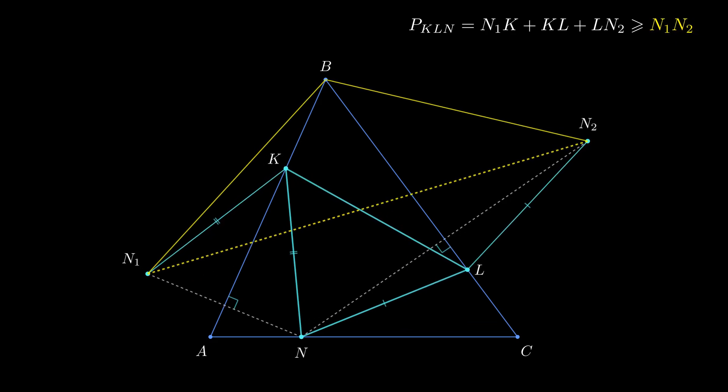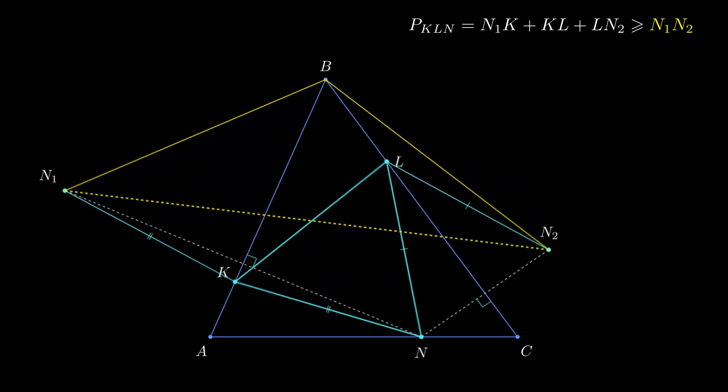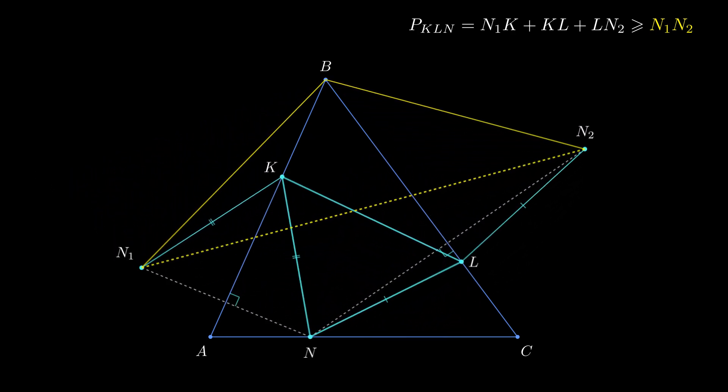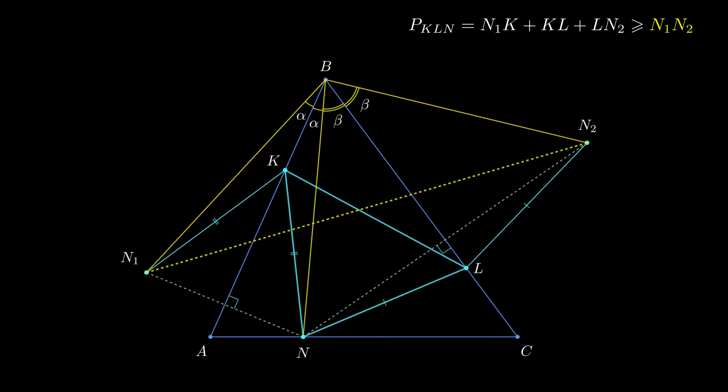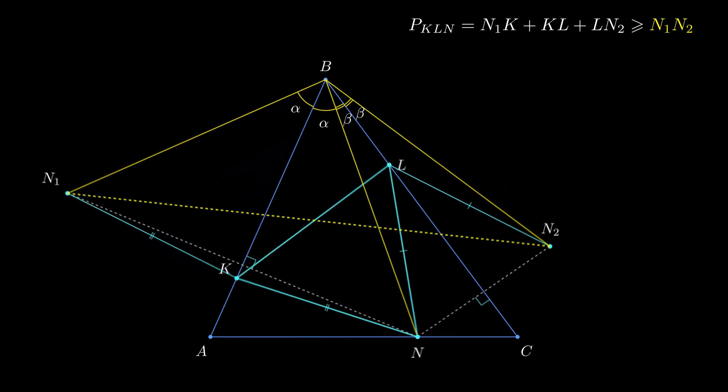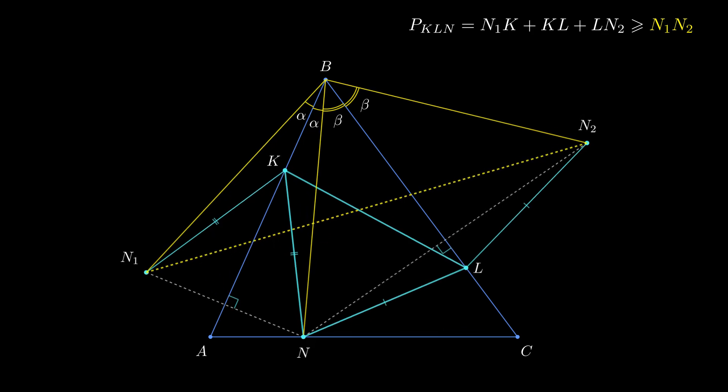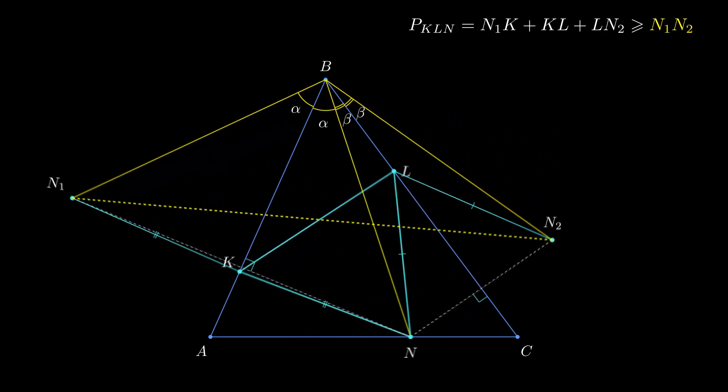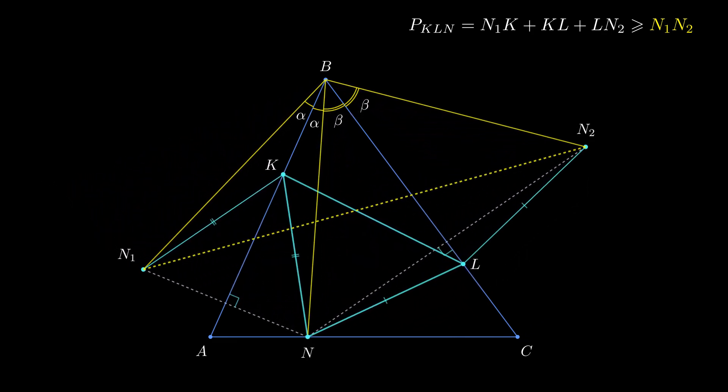Now it would be great if we at least find the minimum length of N1N2. Think about this highlighted triangle. Its angle at vertex B is fixed because it's two times larger than angle ABC of the triangle also named ABC. Turns out that the shorter sides BN1 and BN2, the smaller the length of the third side.